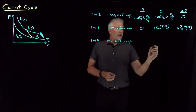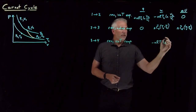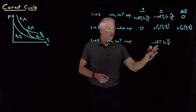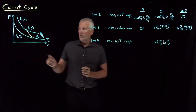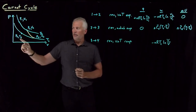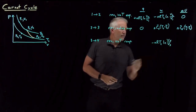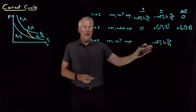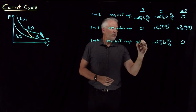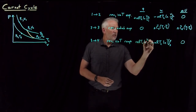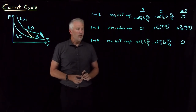The work is still minus NRT log of V final over V initial. The temperature at which I'm doing this process is the cold temperature T_C, and V final over V initial is V4 over V3. It's isothermal, so there's no internal energy change. Q and W have to add up to zero, so heat is positive NRT_cold log of V4 over V3.